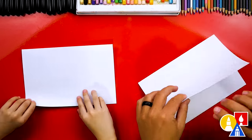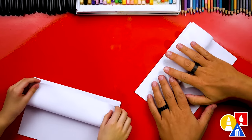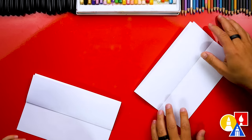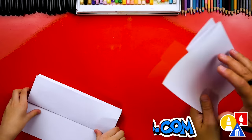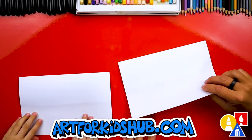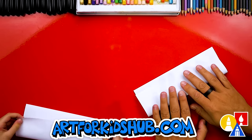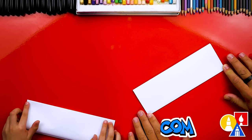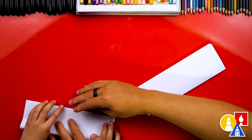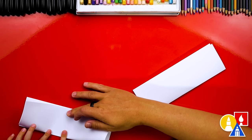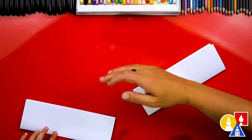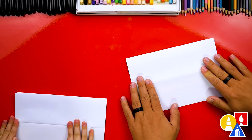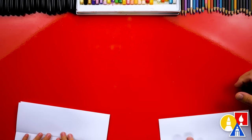Now let's take the top flap and we're going to line it up with the top edge and when it's lined up crease it down also. Then let's flip over our paper and repeat that last step. Take this top flap and line it up with the top edge, crease it down and out to the corners. This is a guide fold.